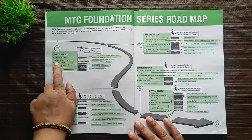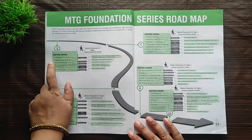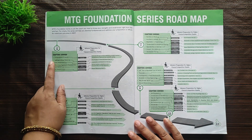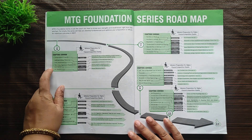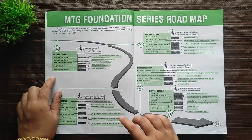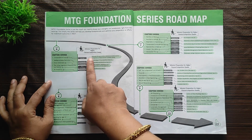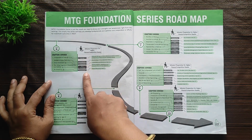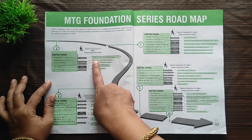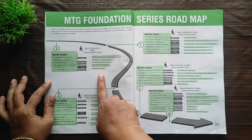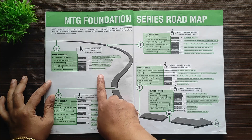Let's get into the detail of the Roadmap for Biology. In the Roadmap, they have listed down all the chapters that will be covered for Class 6, 7, 8, 9 and 10.